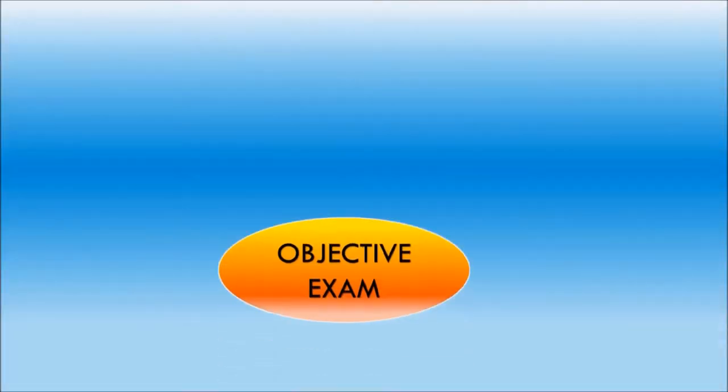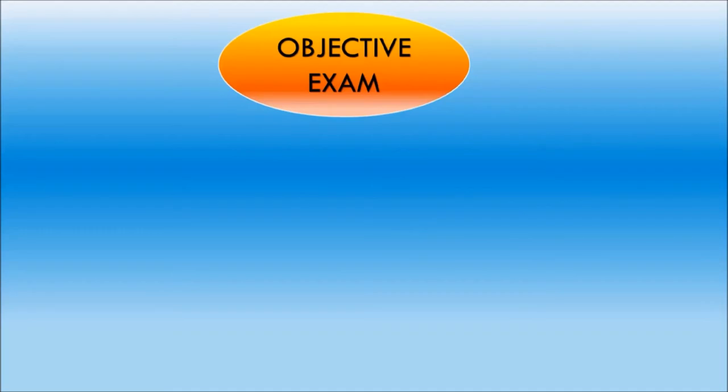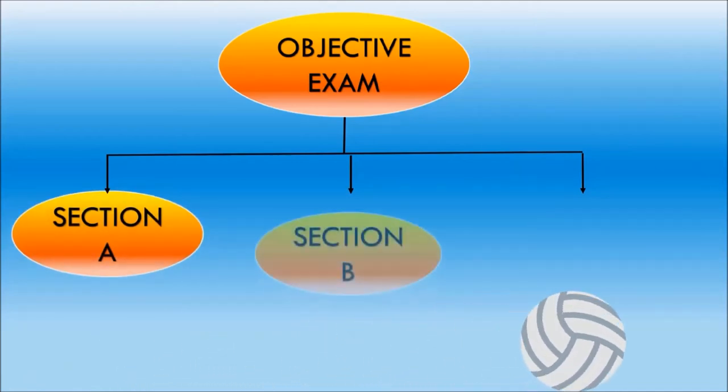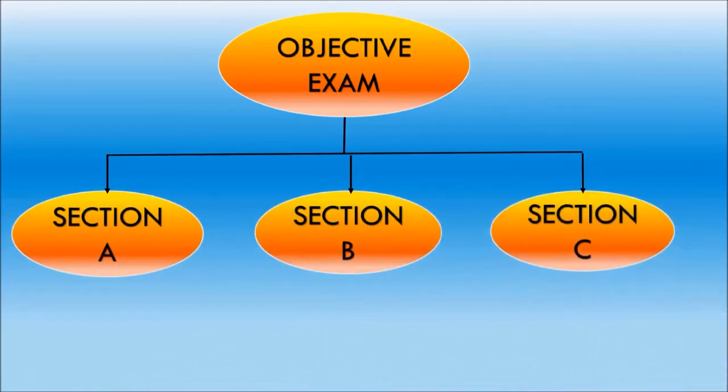Now, let's talk about the objective exam. The objective exam is for 40 marks. The questions are divided into three sections: Section A, Section B and Section C. Let's get into details of each section.